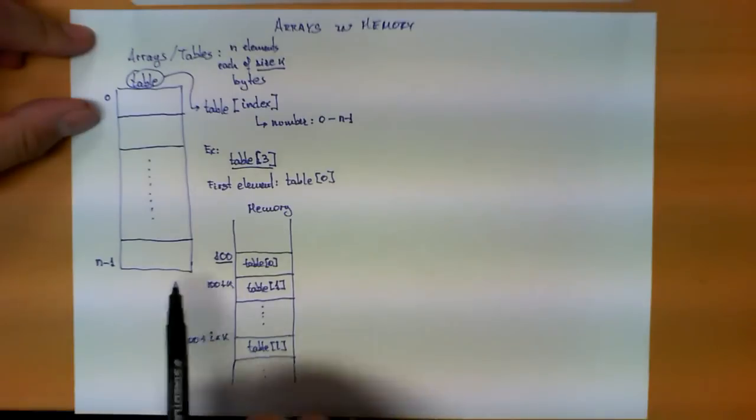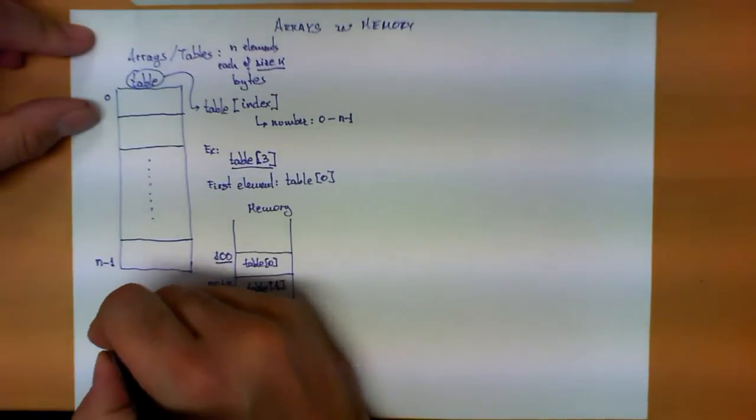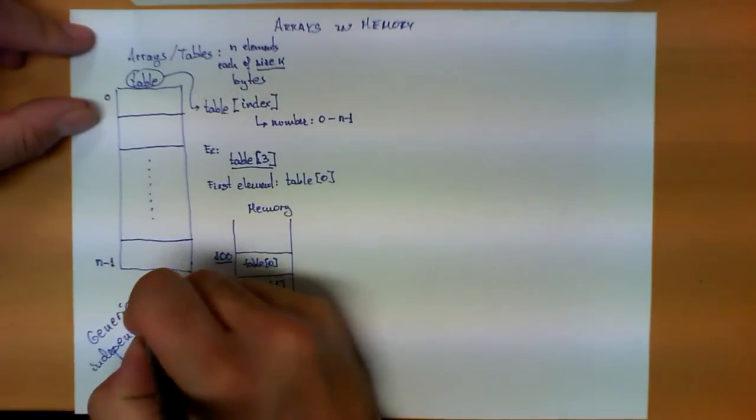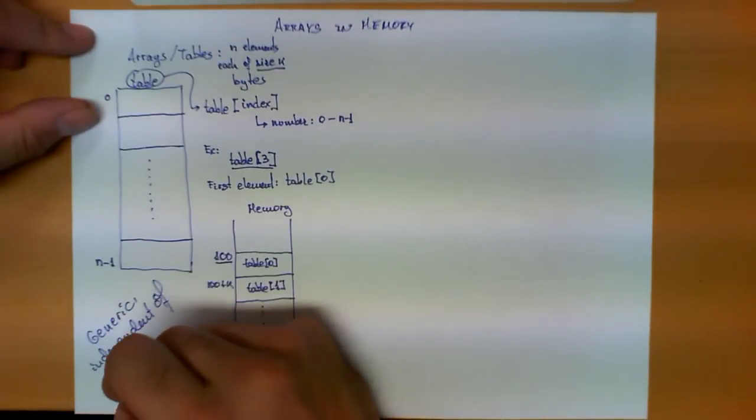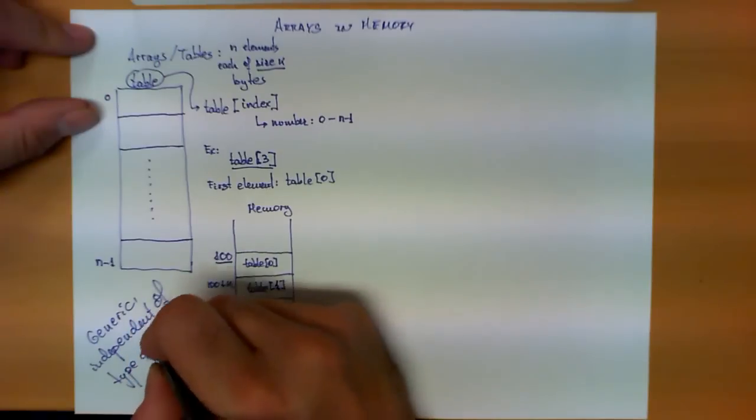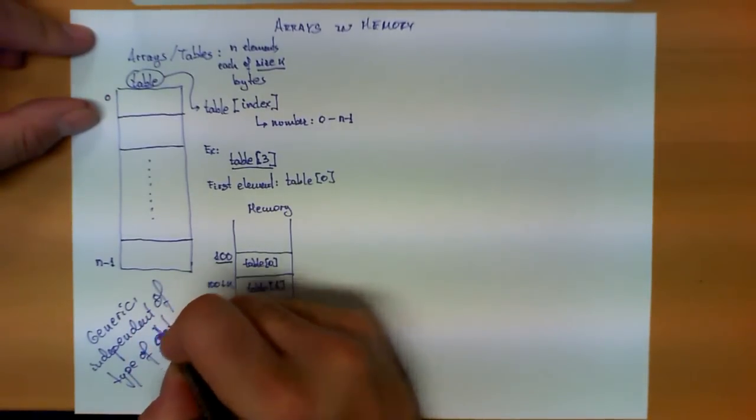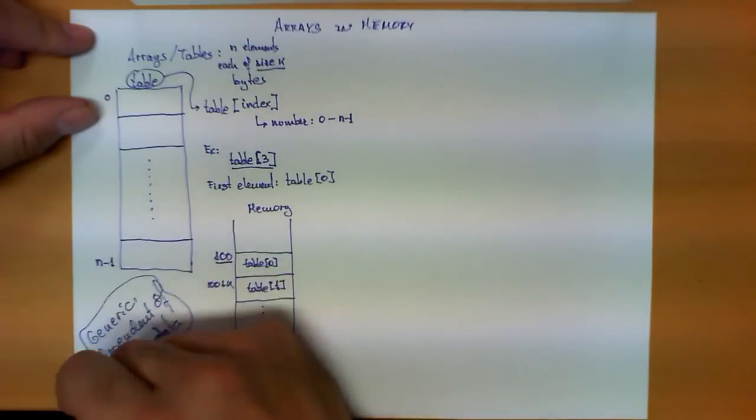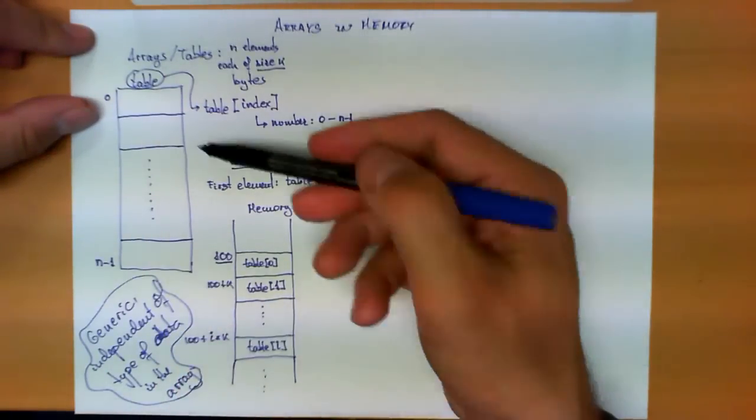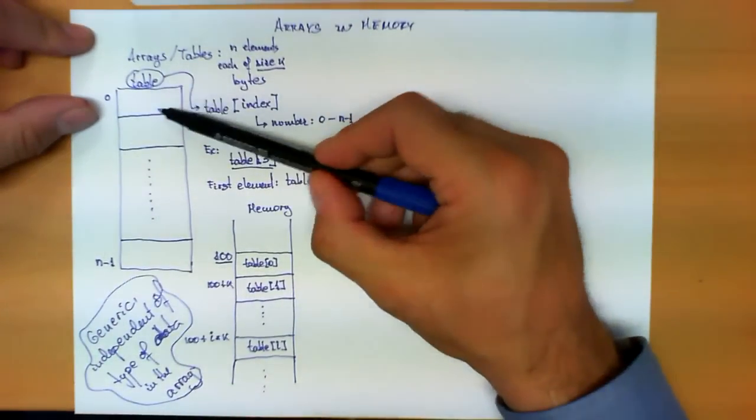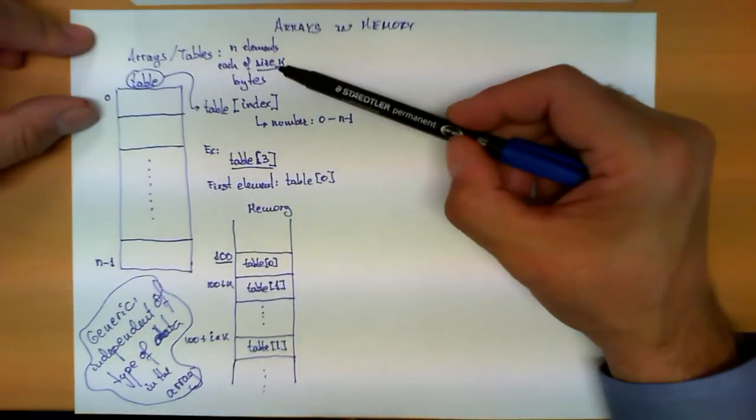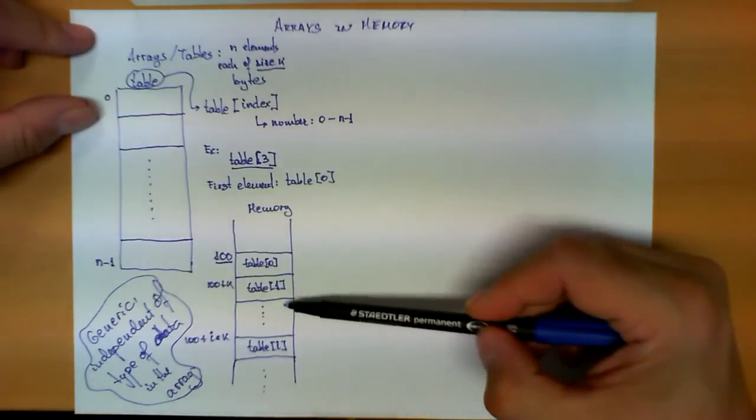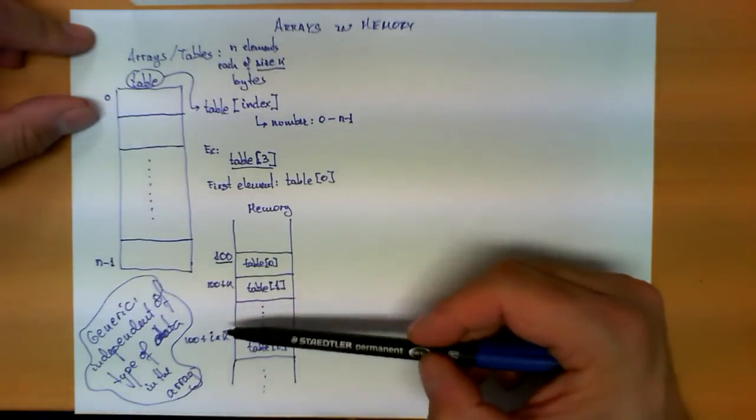Now, think carefully about these notations. This is a generic notation, meaning independent of the type of data in the array. What does that mean? It means that if this array is an array of integers, then each of these boxes will be an integer, and if those have size of 4, then the addresses of these table of 0, table of 1, table of 2 will be 100, 104, 108, 112.